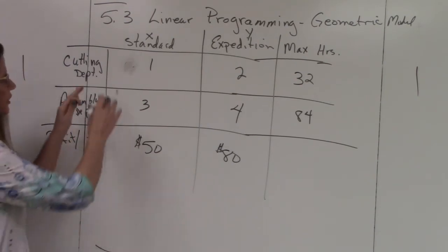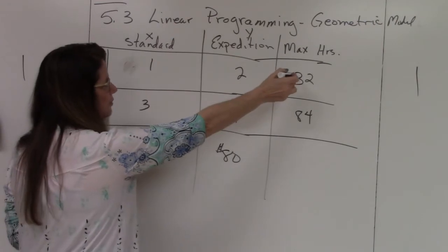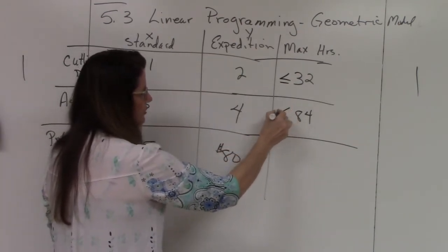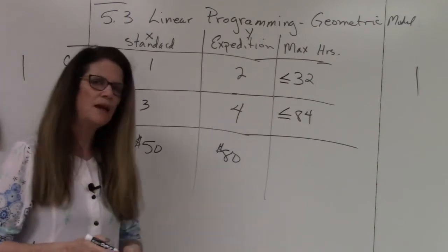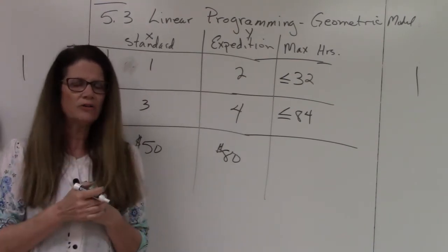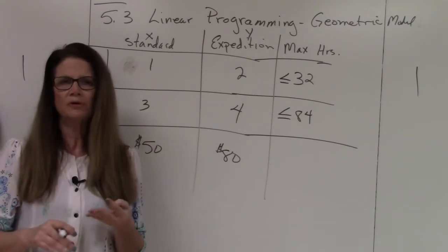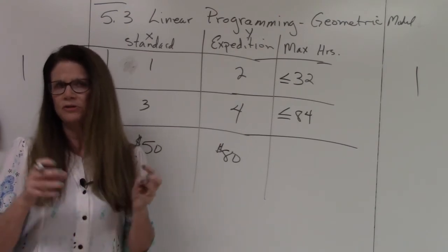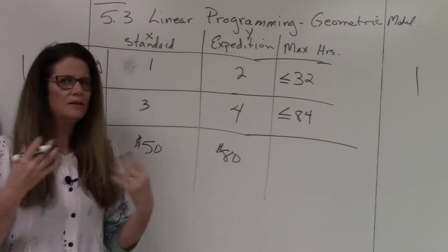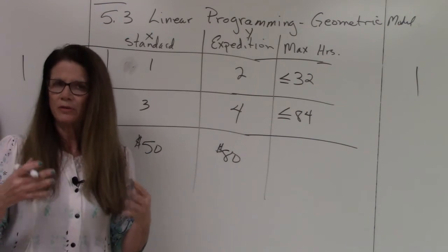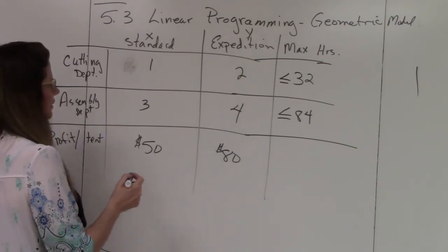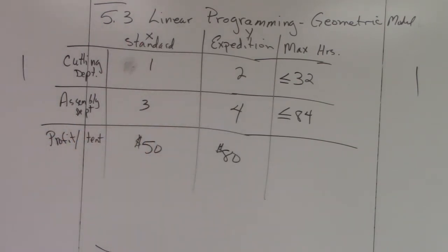This is X, this is Y. Maximum hours means it has to be less than or equal to 32. Eighty-four is the maximum number of hours, so it has to be less than or equal to 84. In other words, I can't go higher than 32 hours for cutting - that's the only number of hours that I have.